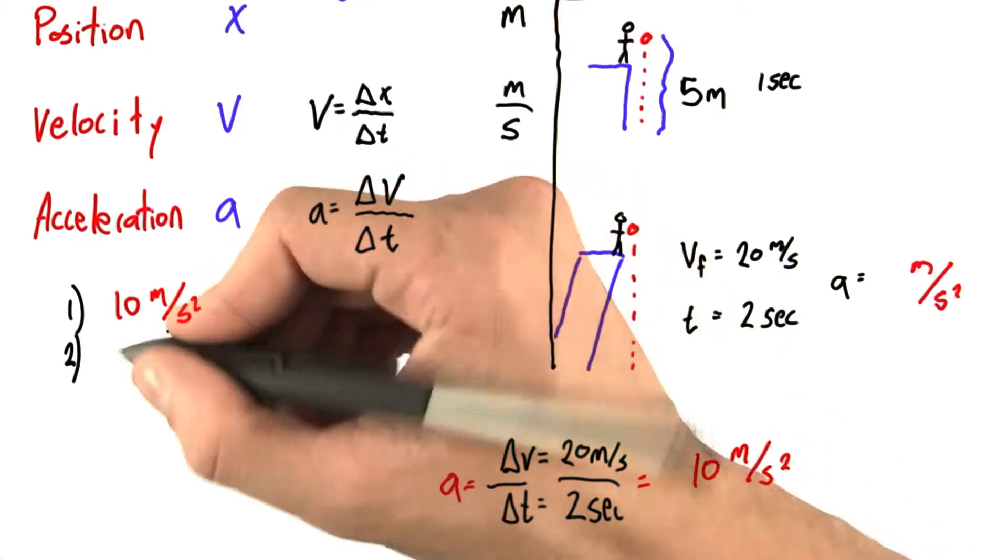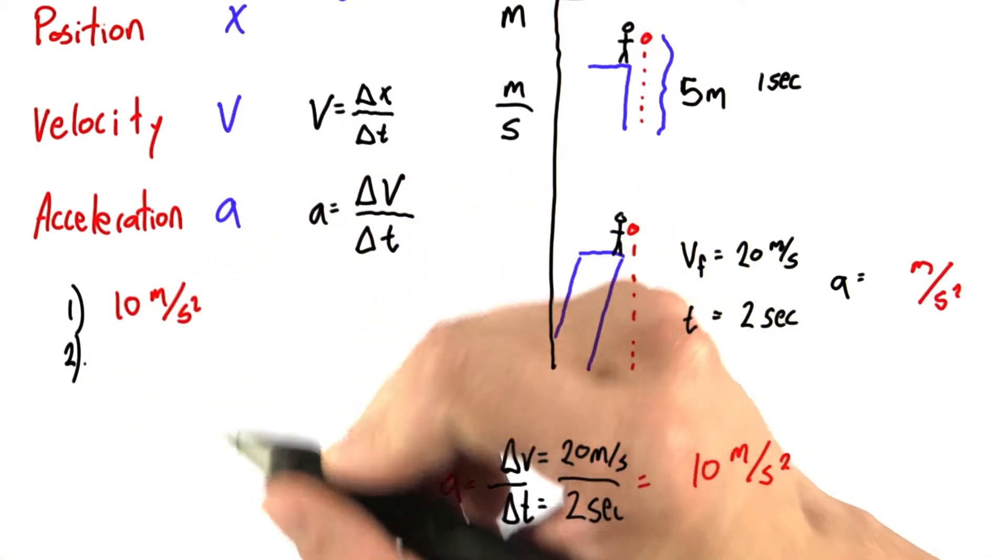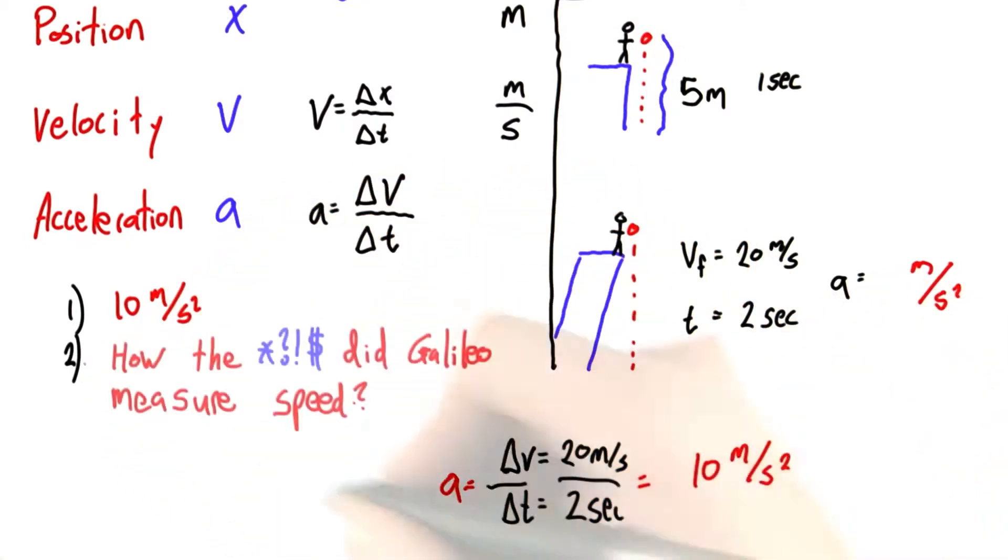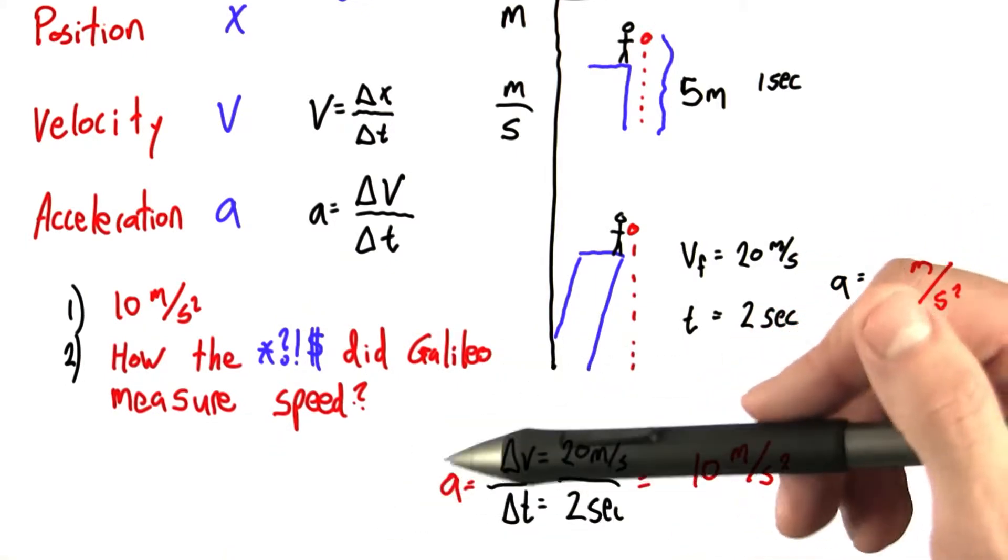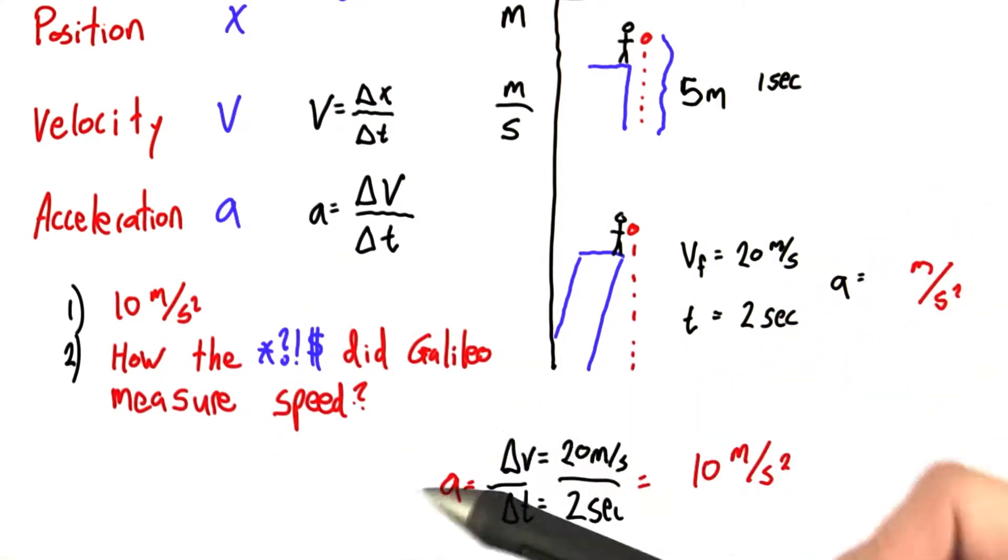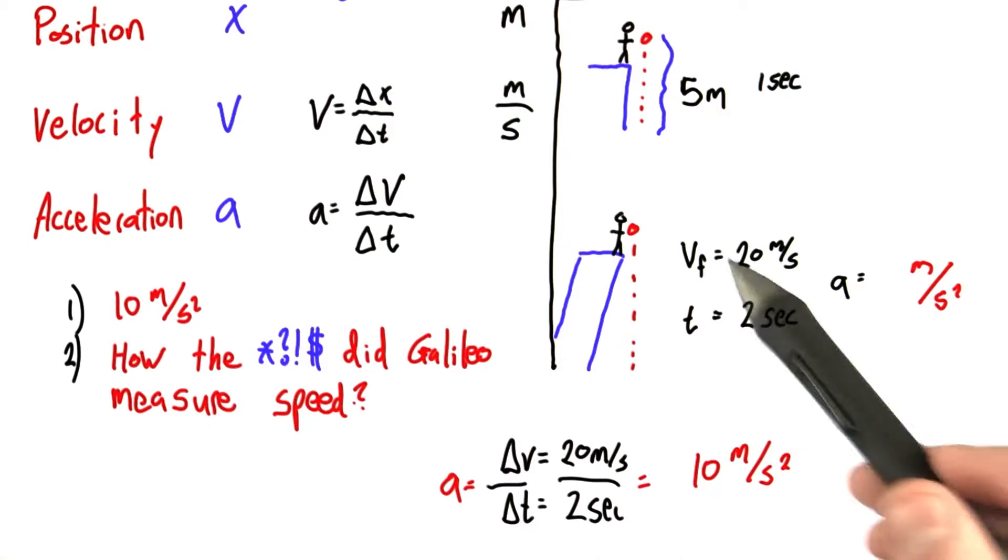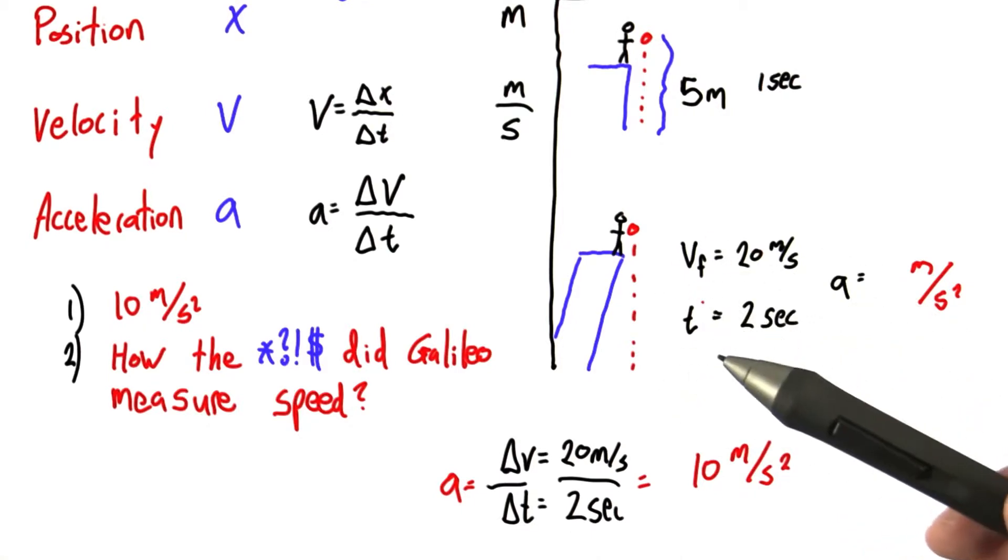That's probably the most correct. But your second answer, which I would have been very impressed with as well, is how did Galileo measure speed? This was hundreds of years ago. They had no good way of measuring speed. And so the very question that I gave to you was pretty flawed in that sense.